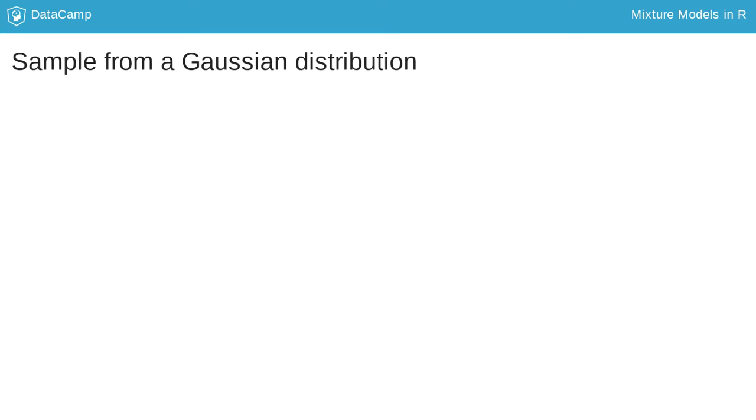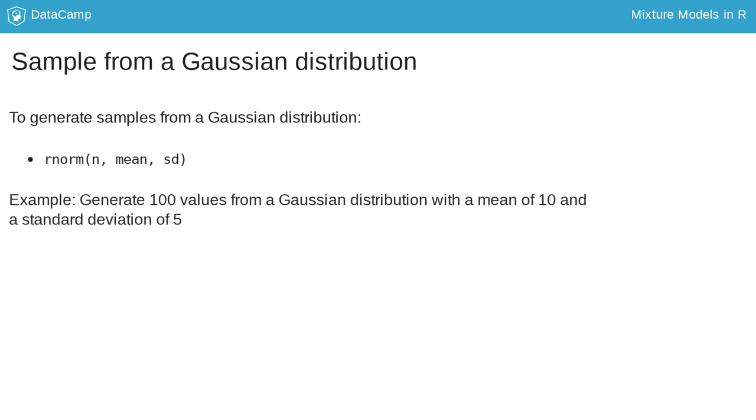To understand mixture models, we can start simulating the random variables involved to picture what we'll try to model. We begin by sampling from a univariate Gaussian distribution, using the function rnorm. This function takes the number of samples we want, the mean and the sd, which refers to the standard deviation. In this example, we generate 100 values from a Gaussian distribution with a mean of 10 and a standard deviation of 5.